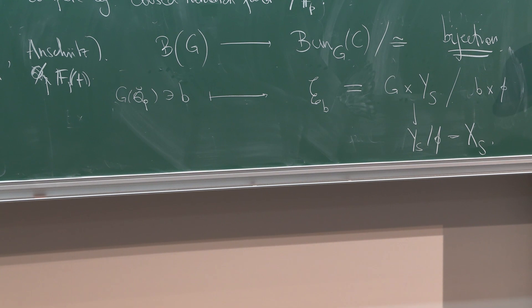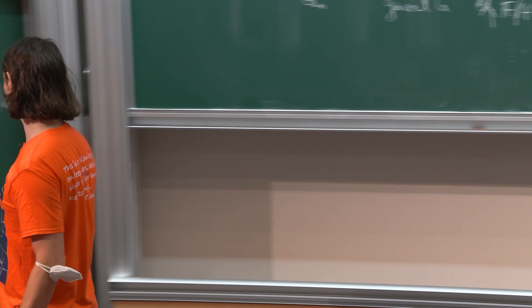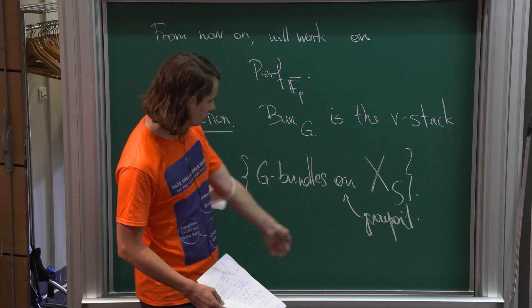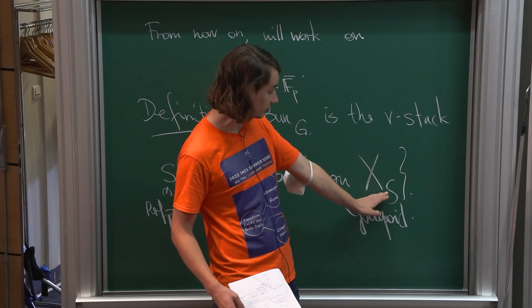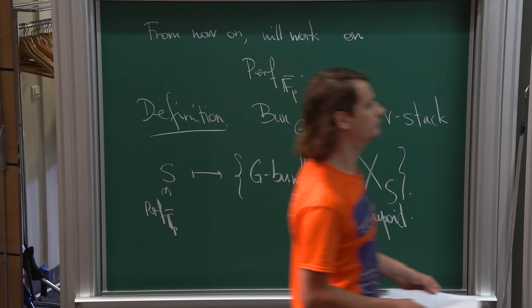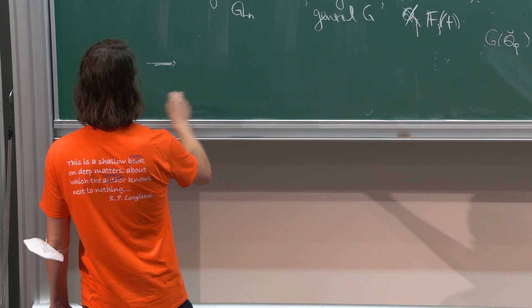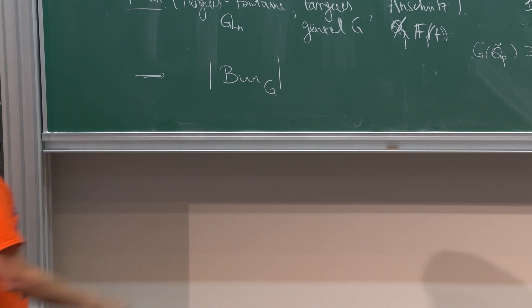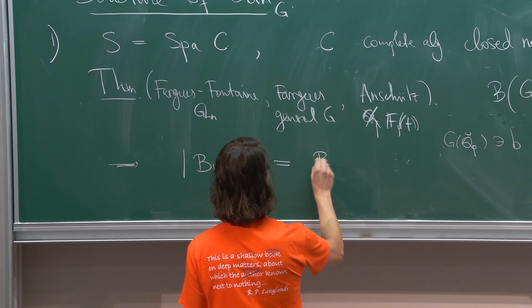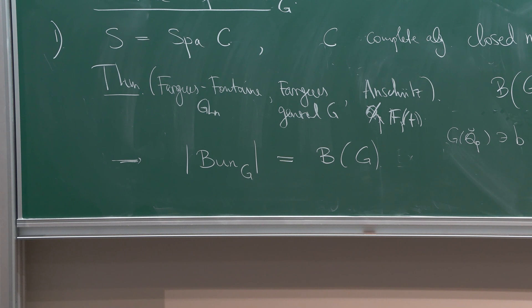Can you also define a torsor on the diamond, or do you really need the adic space? No, you really need the adic space structure, because the diamond forgot what the structure sheaf on this thing is. The coherent sheaf theory of G-bundles and so on really requires you to know what the coherent structure sheaf is. It follows that the underlying topological space of BunG — meaning the isomorphism classes of geometric points — is just the set B of G.